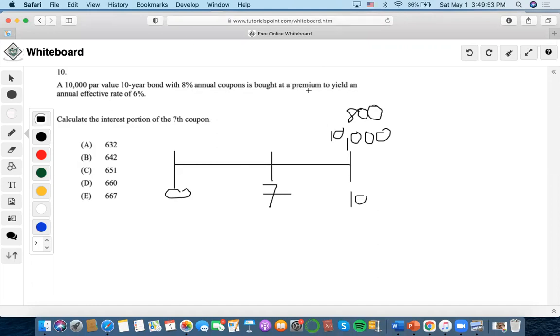So it is bought at a premium to yield an annual effective rate of 6% to find the interest portion of the seventh coupon.